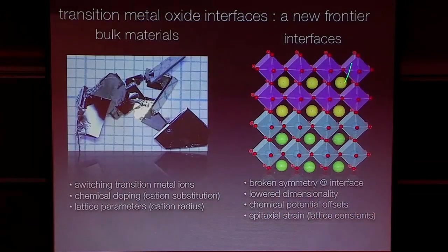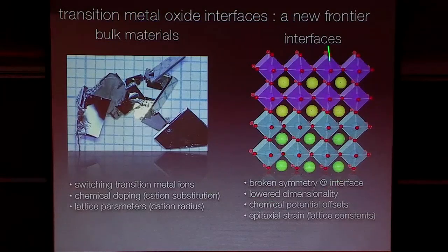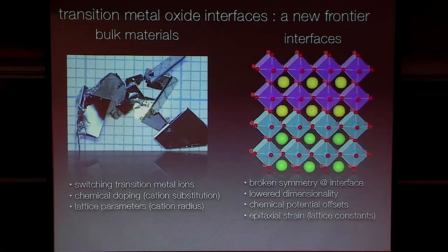We've been making what I would say are really our first baby steps into exploring artificial heterostructures of correlated materials, trying to see if we can learn something about the interactions in these materials in addition to more bulk-like materials. So in these bulk materials you have a great deal of tunability, and at these interfaces you can use all the games that people here at Santa Barbara have used for many years — broken symmetry at the interface, lowered dimensionality, et cetera — so you have all the additional knobs that you can turn to control things.